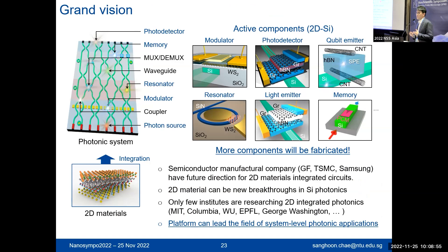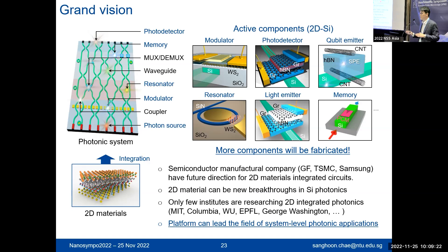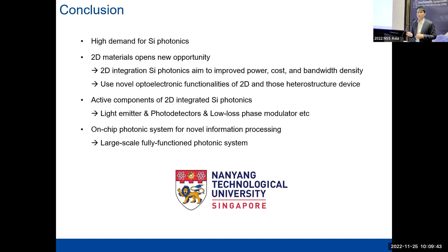The grand vision is to make more essential functional devices for a full-function silicon photonic chip. There's still a long way to go — we need to do more work on memory, resonators, and light sources: what wavelengths are needed, whether LEDs or lasers are appropriate, or if we move toward quantum information which is even more complex. But it's a very exciting field. I thank Park Systems — I use their AFM tools extensively for both characterization and fabrication. This is the end of my talk; thank you very much, and I welcome any questions.